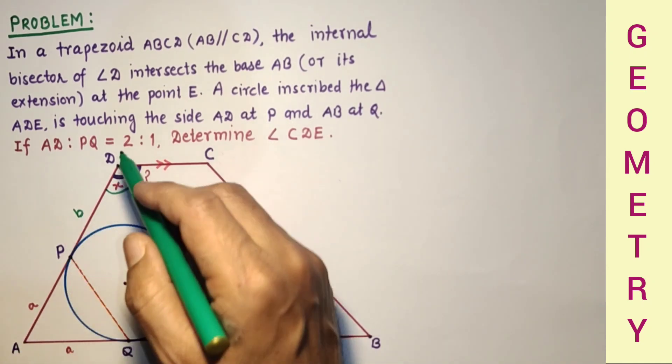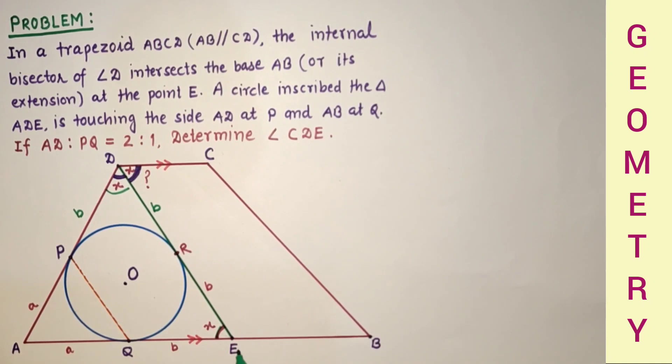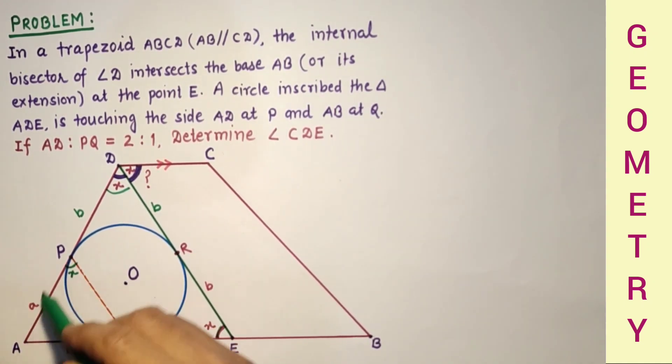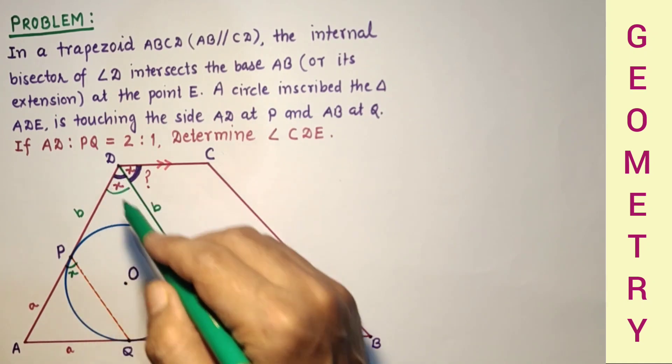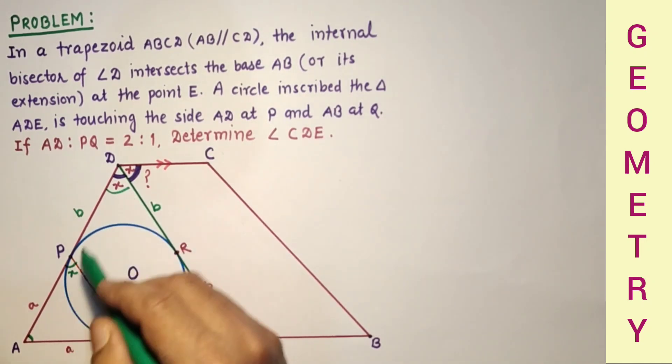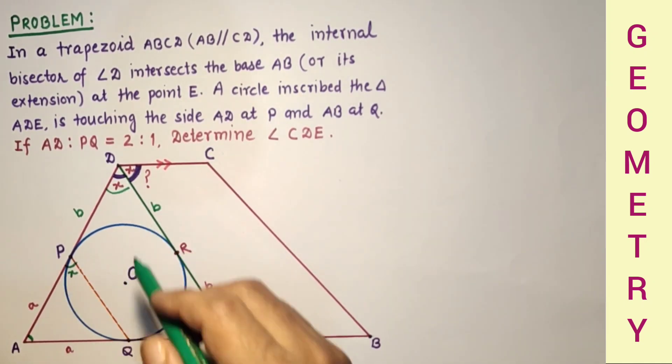Since AP is to PD equals AQ is to QE, therefore PQ is parallel to DE. And if PQ is parallel to DE, then we can say that this is X also. Now these two triangles, triangle APQ and triangle ADE, are similar because this is common and this angle is equal to this angle. By AA test of similarity, these two are similar.